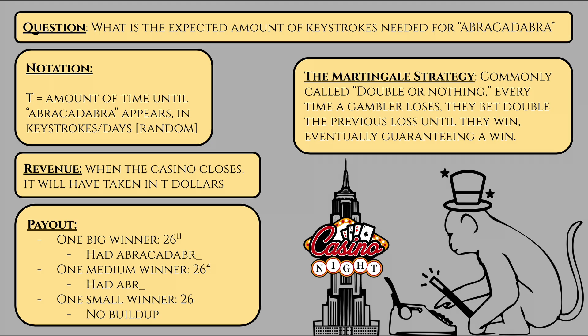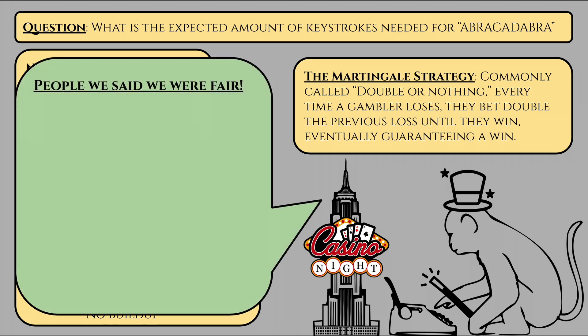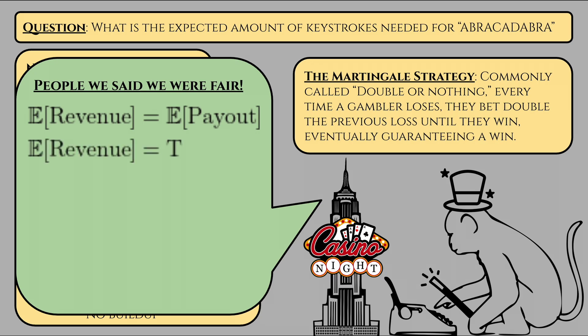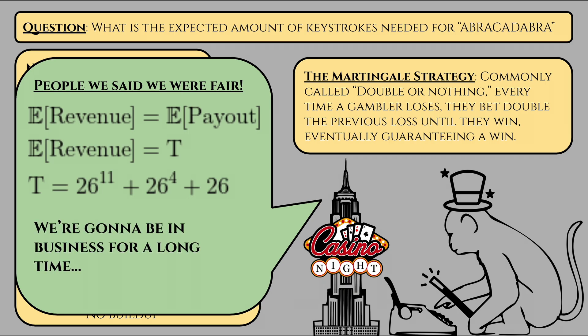Now this value might seem astronomically disastrous for our casino — after all, it's a really big number. But something we established at the very start finishes this proof beautifully. Remember, we've explicitly stated that the casino has been giving fair odds the whole time. This means that in the long run, we can safely declare that the casino's expected revenue will equal their expected payouts. Obviously in the short run this might not be the case, but that scenario is astronomically improbable compared to the much more likely outcomes. So, the expected number of keystrokes for our monkey to type abracadabra is T = 26 to the power of 11 plus 26 to the power of 4 plus 26, meaning the monkey needs around 3 quadrillion keystrokes before we should expect to see abracadabra appear.